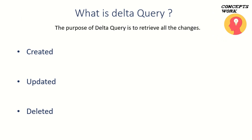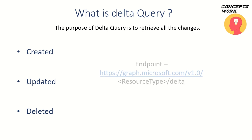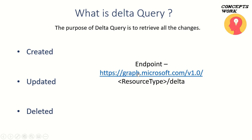The purpose of Delta query is to only retrieve the changes which are implemented — in terms of getting new objects created, getting any object updated, or getting any object deleted. In a typical scenario, the endpoint that you will access will be graph.microsoft.com/v1.0 followed by your resource type, which can be user, group, messages, or anything which exists in the metadata. But every time you go to this particular endpoint, you'll get the list of all the users that exist in a particular directory. Think about a scenario where my application made a request and got a list of 50 users.